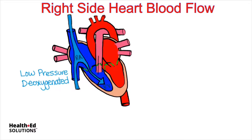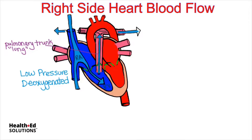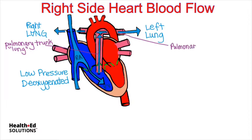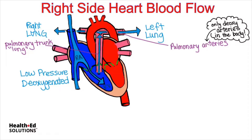When the ventricles pump, this deoxygenated blood is pumped up the pulmonary trunk. The word pulmonary means lungs, and so it makes sense that this blood is headed there. Then it goes out the pulmonary arteries to the right lung and the left lung. These pulmonary arteries are the only deoxygenated arteries in the entire body. There is an exception in the fetal circulation, but we will discuss that in a different video.